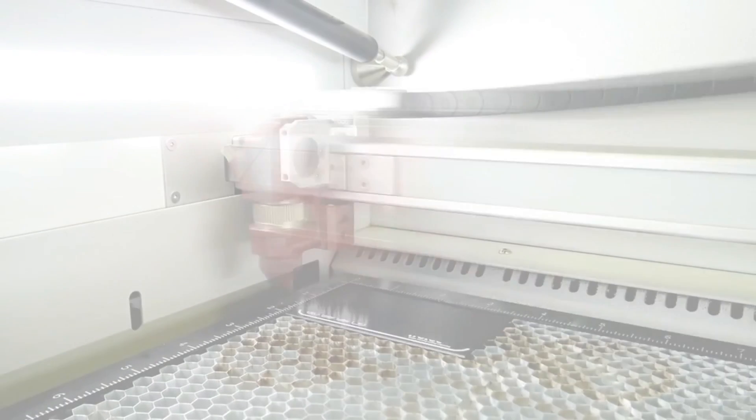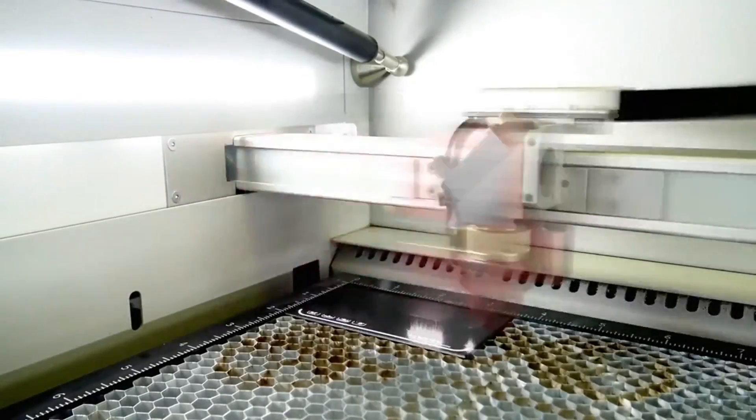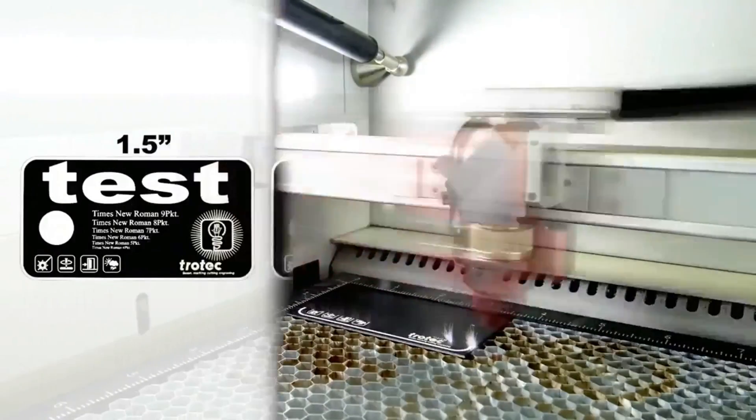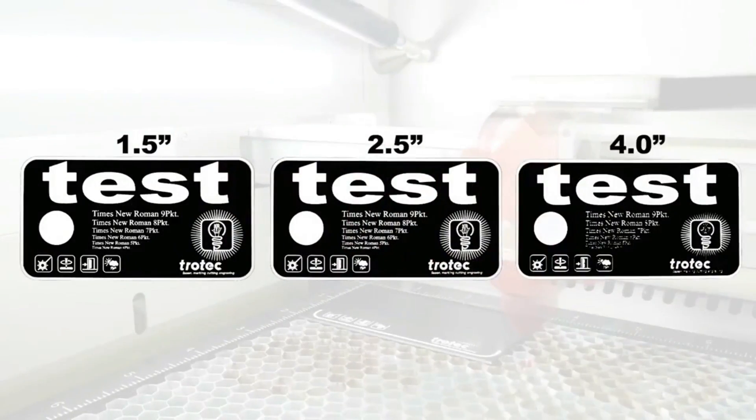For this first example, we will engrave a Trotec test graphic using the 1.5, 2.5, and 4-inch lens on anodized aluminum. Here we can see the outcome of three different pieces.